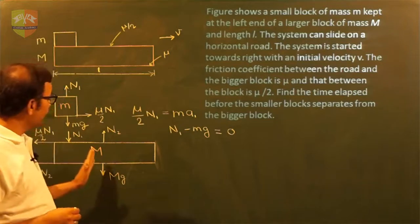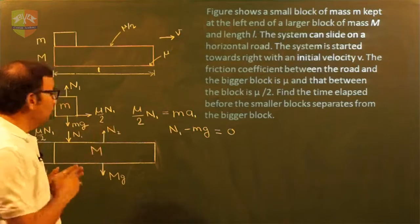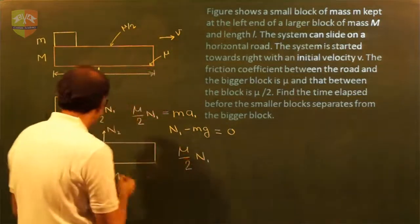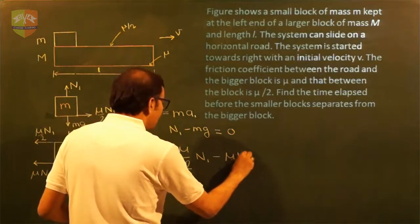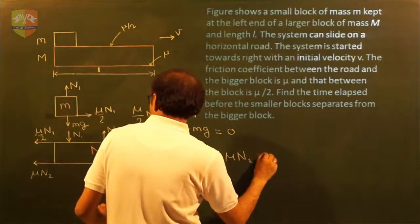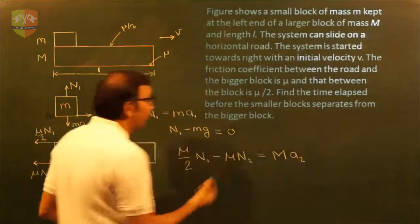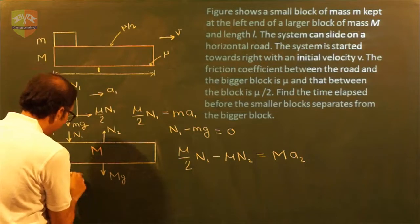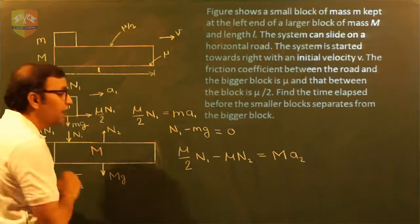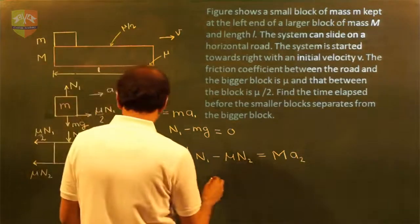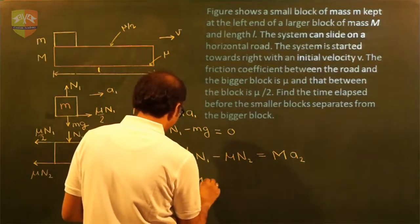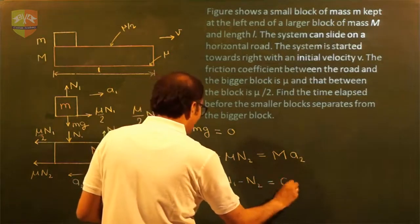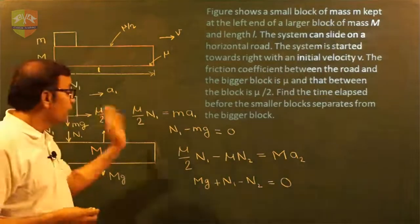For capital M along the horizontal direction: the friction mu/2 × N1 acts backward, and mu times N2 also acts backward, giving: -mu/2 × N1 - mu × N2 = M × a2, where a2 is the acceleration of capital M in the backward direction. Along the vertical direction: mg plus N1 minus N2 equals zero, so N2 = mg + N1.